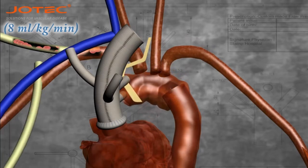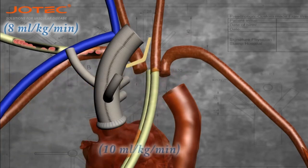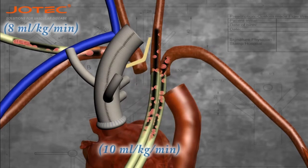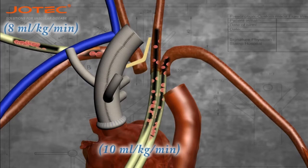Resection of the aortic arch. Two separate cannulas will provide perfusion for the left carotid artery and the left subclavian artery.